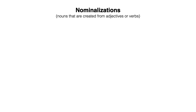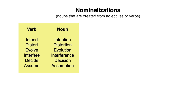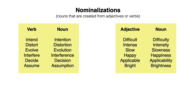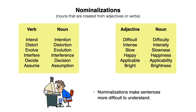Now we can turn to nominalizations. Nominalizations are nouns that are created from adjectives or verbs. For example, the verb "intend" can turn into the noun "intention," or the verb "distort" can turn into "distortion." Similarly, the adjective "difficult" can turn into "difficulty," or "intense" can turn into "intensity." There are some cases where you might prefer to use the noun, but in general, nominalizations make sentences more difficult to understand and they often just kill your writing.